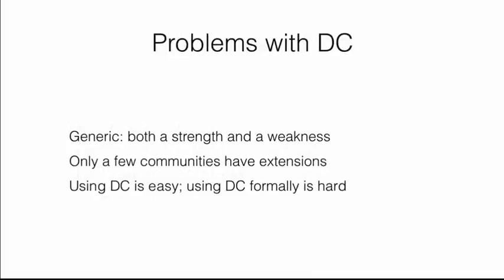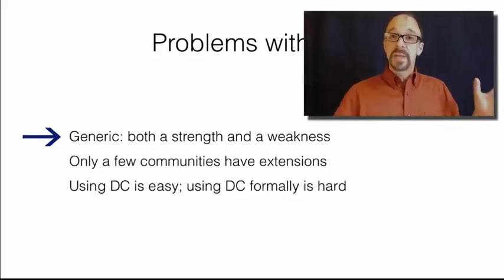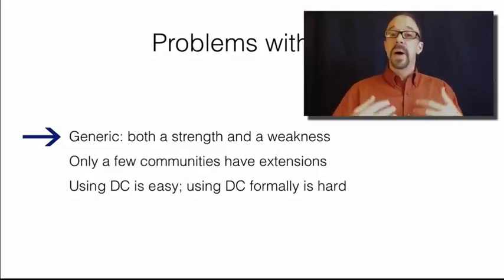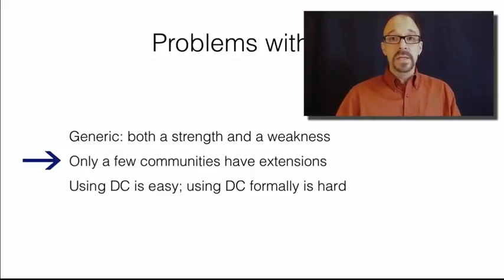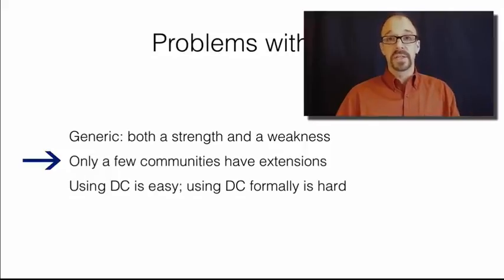Dublin Core has its problems to be sure. It is generic — Dublin Core is intended to be able to describe literally any kind of resource, which makes it very useful and broadly applicable, but with that comes a lot of restrictions. It describes anything, but that means it doesn't describe anything very well. That is both a strength and a weakness, but it was a deliberate decision on the part of the creators of Dublin Core to lower the cost of adoption. Another limitation of Dublin Core is that only a few communities have extensions to Dublin Core. It's not difficult to build those extensions as we've seen, but not everyone has done it.